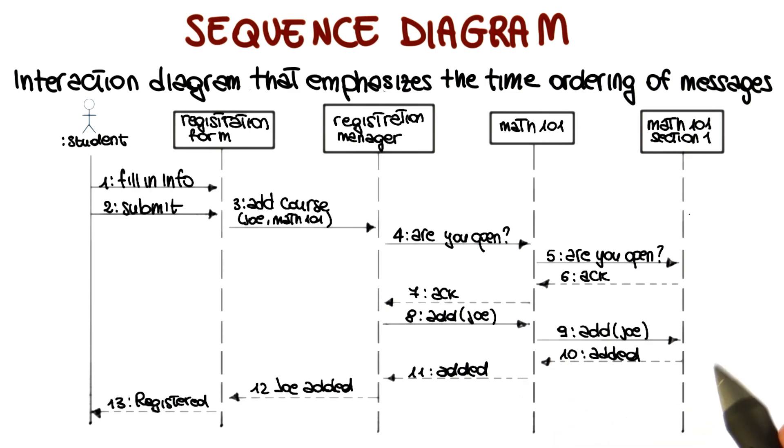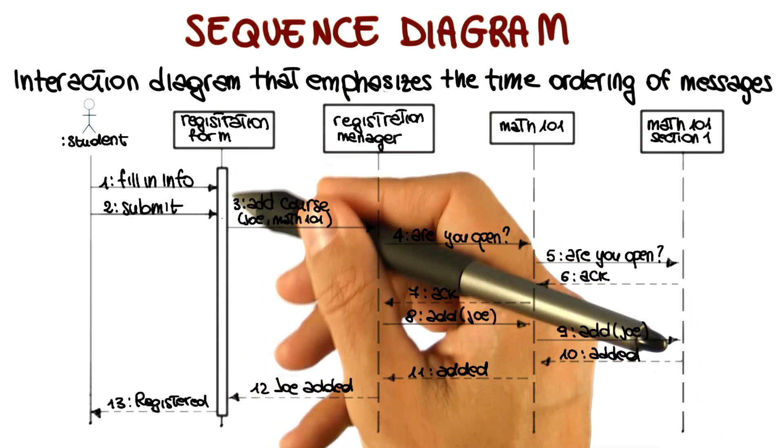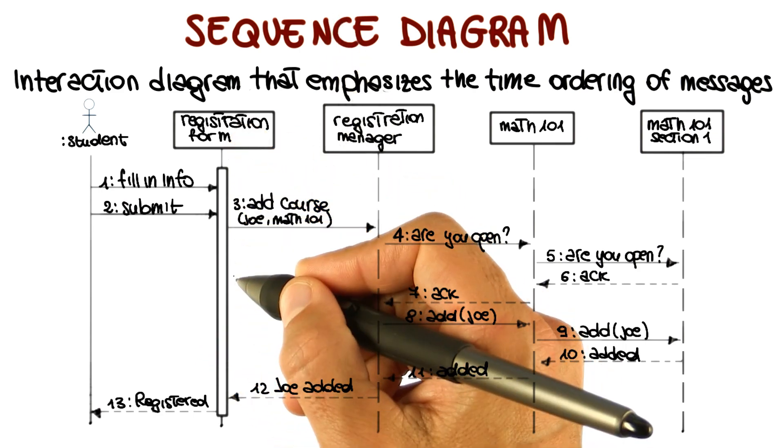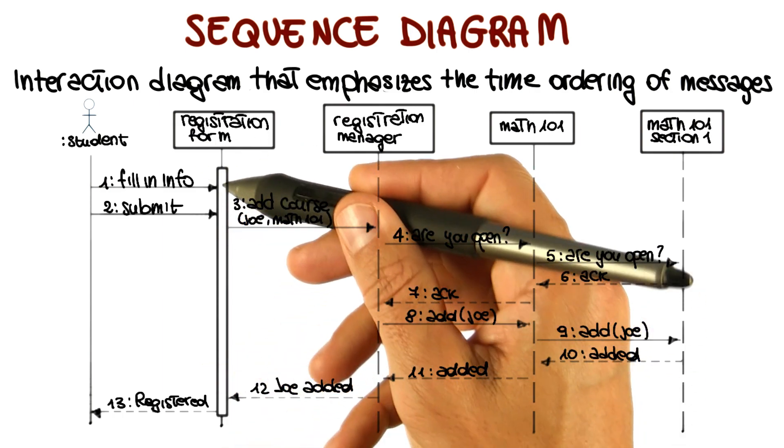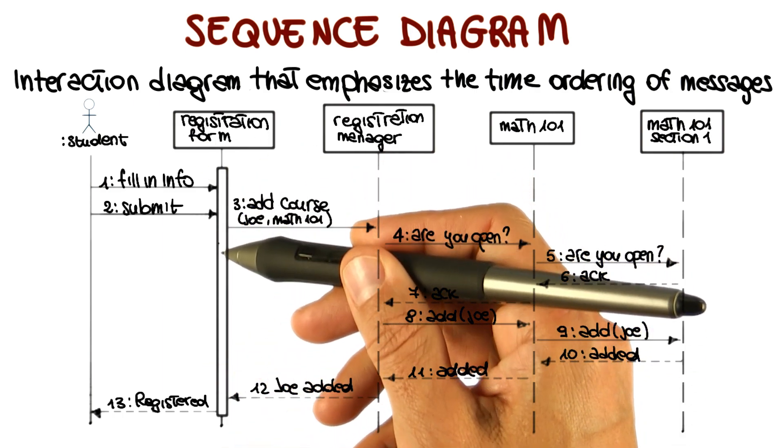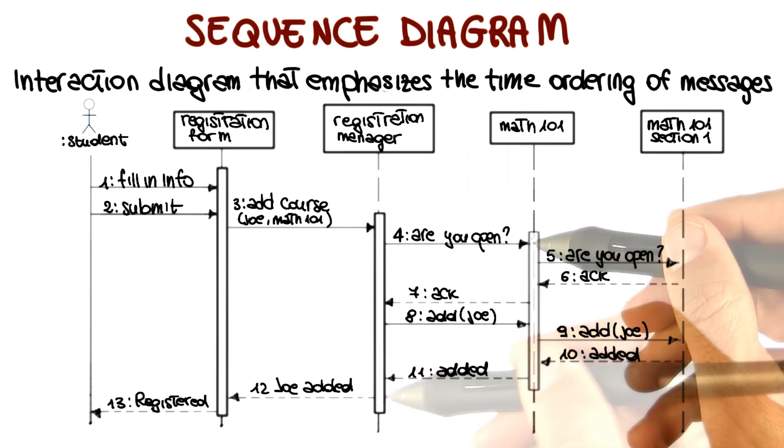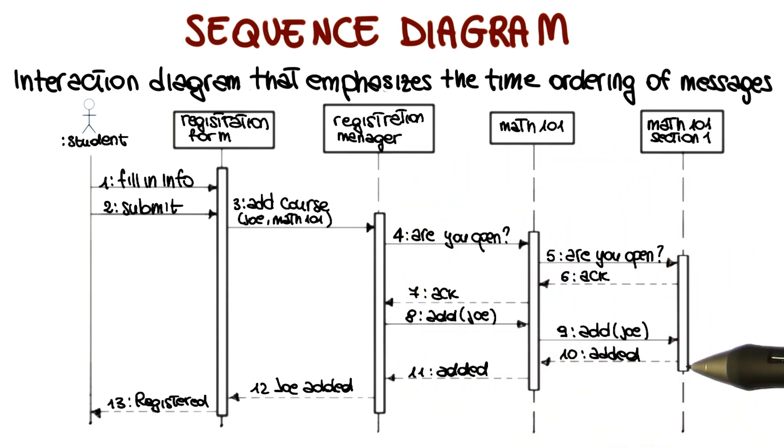The last notational element that I want to add to this diagram is the focus of control, which is this tall, thin rectangle that shows the period of time that an object is performing an action, either directly or indirectly. If we look at the registration form, this is telling us that the registration form is active for this amount of time. And the same thing we can do for the registration manager, the Math 101 course offering, and the Math 101 specific section.